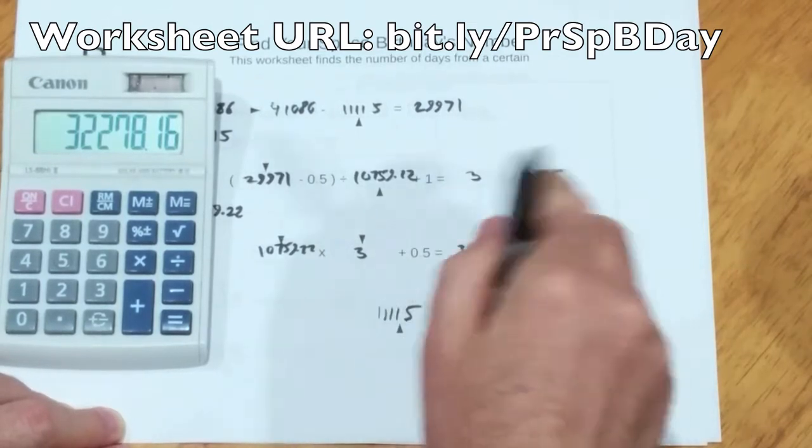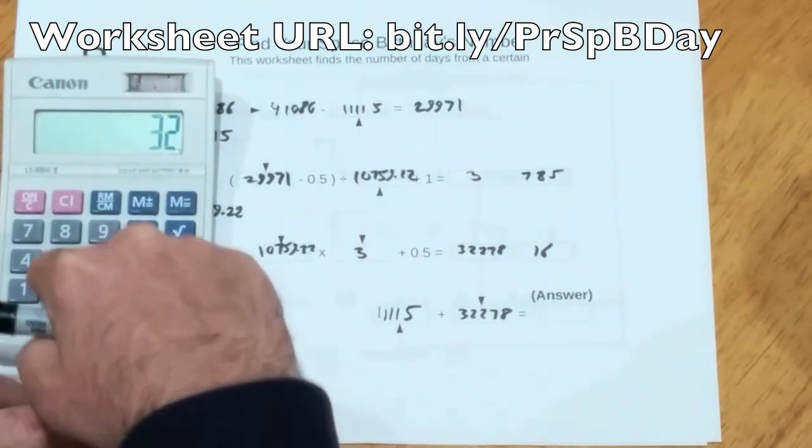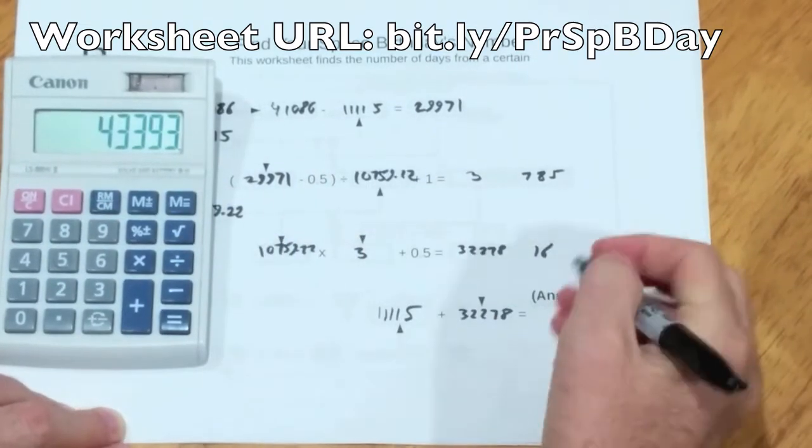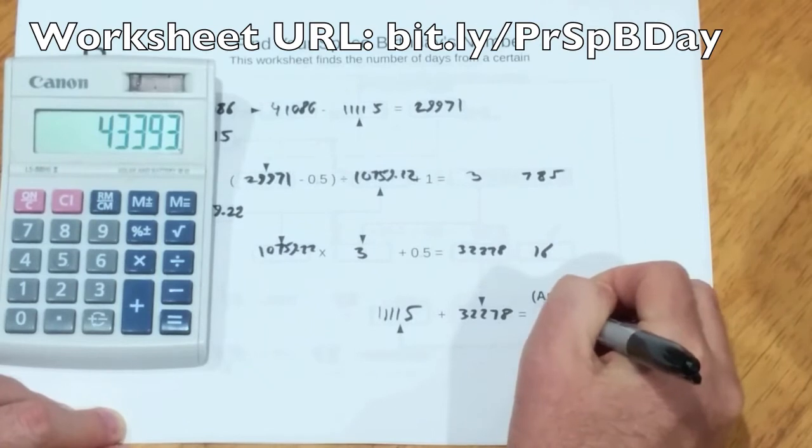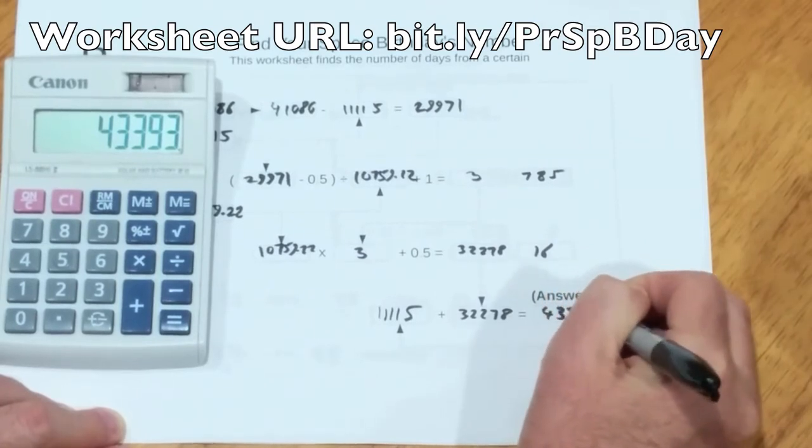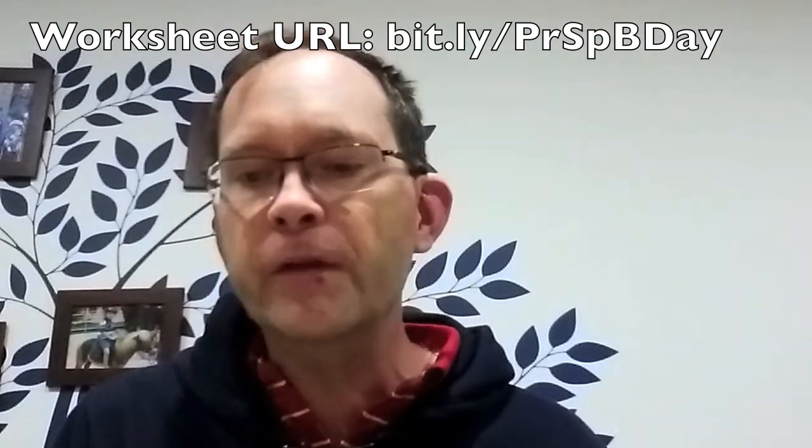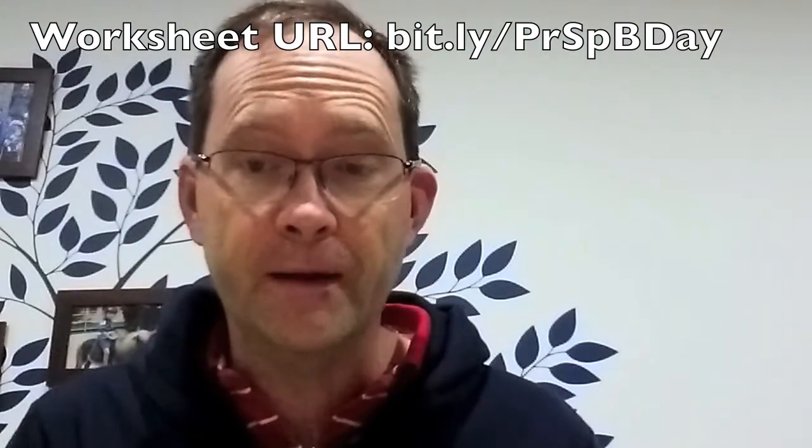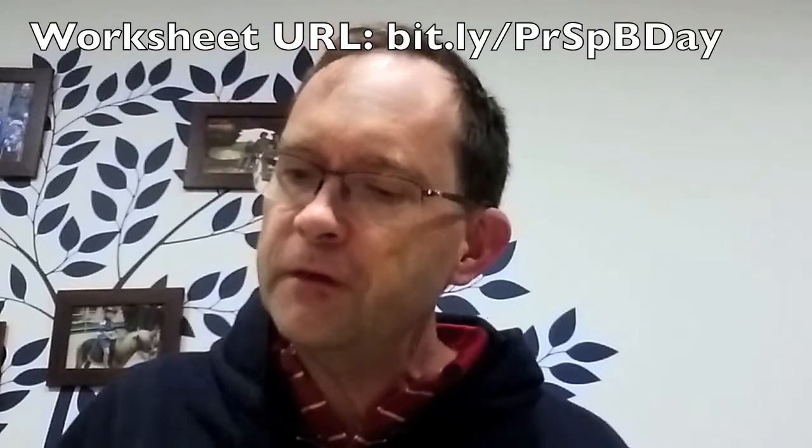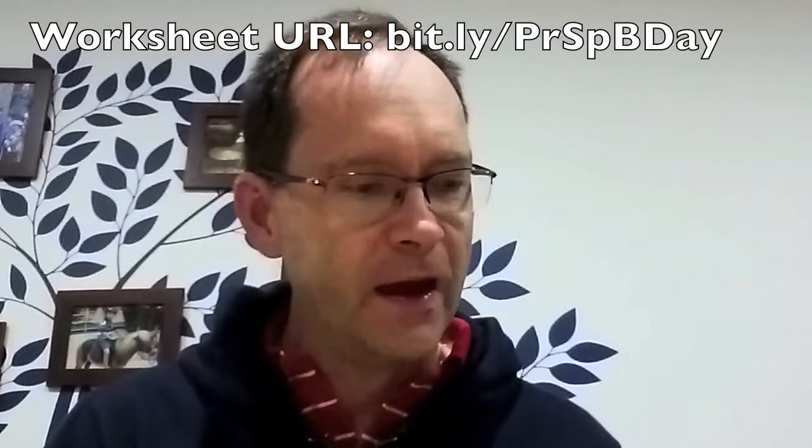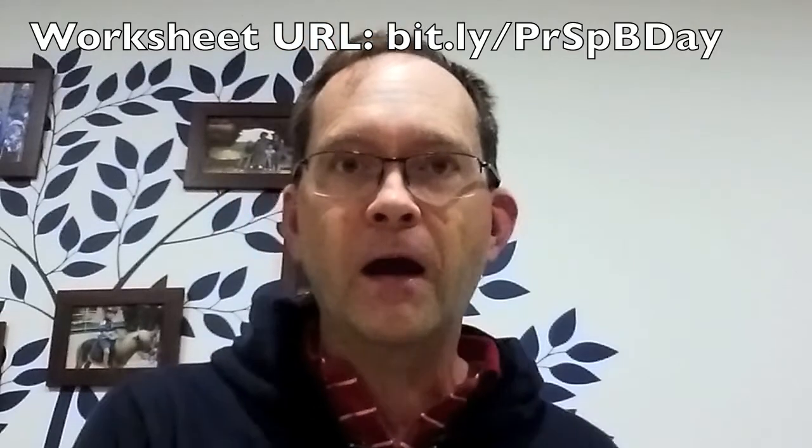What we next need to do is copy down the number of days corresponding to the day he was born. And we now get 32278 plus 11115, a number corresponding to Neil Armstrong's next Saturn birthday. But this is not much use. It's not a date. To convert it to a date, I've got a third worksheet, worksheet number C.